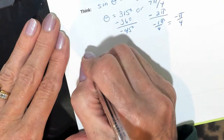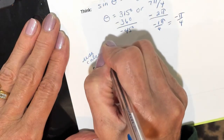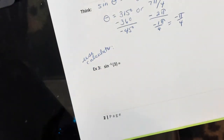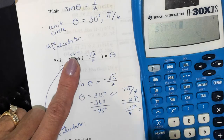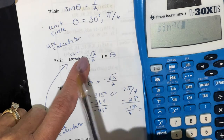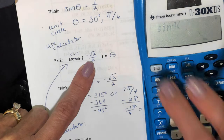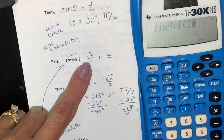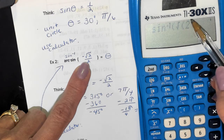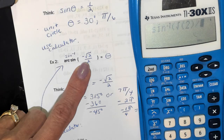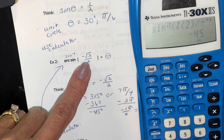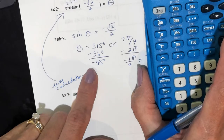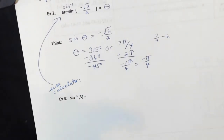Let's also use our calculator. Some of you will want to use your calculator, some will want to use the unit circle. So inverse sine — I like to move the negative with the 2. So I'll go square root of positive 2, close the parenthesis, and divide by negative 2, then close this parenthesis. And there we go: negative 45 degrees, which is the same as negative pi over 4.